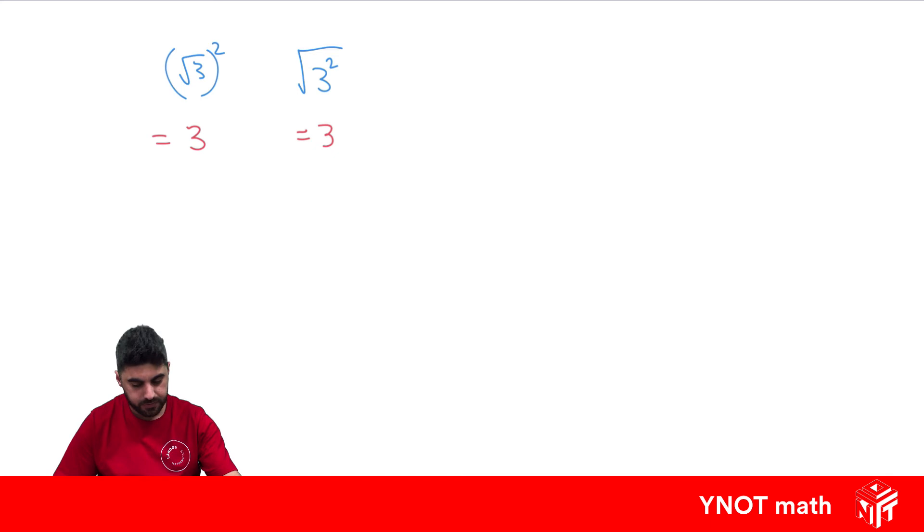What if we have 2 root 3 squared? Well, all we have to do is raise each of these terms to the power. So we get 2 squared, which equals 4, times root 3 squared. Well, the square and the square root cancel out and we get 3. And 4 times 3 is 12.